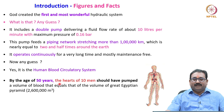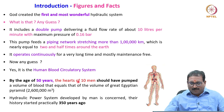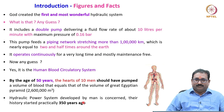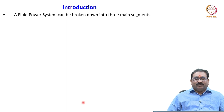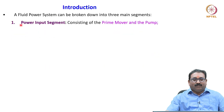By the age of 50 years, the hearts of 10 men should have pumped a volume of blood equal to the volume of a great Egyptian pyramid. Regarding man-made hydraulic power systems, their history started practically 350 years ago. We are now focusing on the current-day fluid power system to generate large amounts of force and required speed. A fluid power system can be broken down into three main segments. The first is the power input segment, which basically consists of a prime mover and the pump.